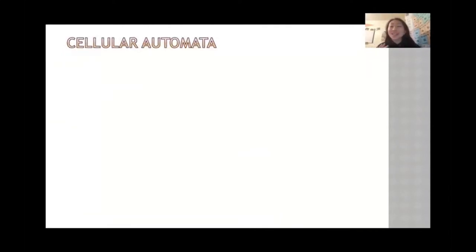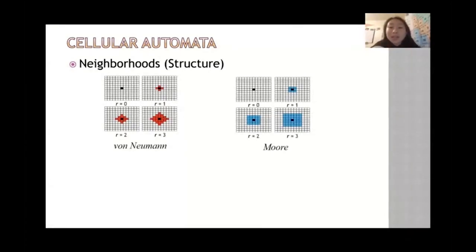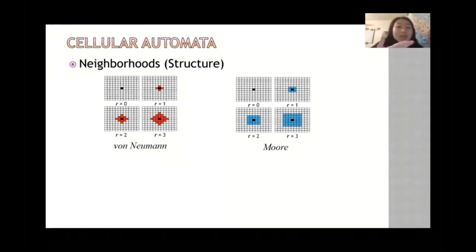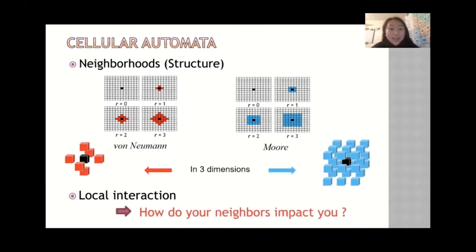The most important concept of cellular automata is the concept of neighborhoods. If you look at a grid, you'll see a black cell, and the shaded cells surrounding it are the neighbors of that cell. The properties of these neighbors essentially define the status of that cell of interest in future steps or generations. We can also see neighborhoods in 3D, which is relevant because my model is a 3D model. The overarching concept of cellular automata is local interaction — how do your neighbors impact you.